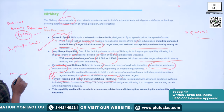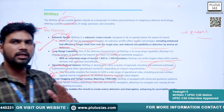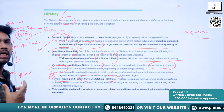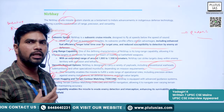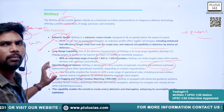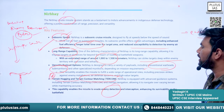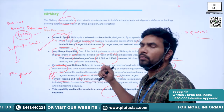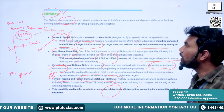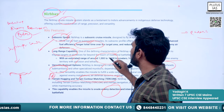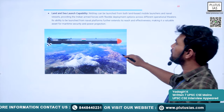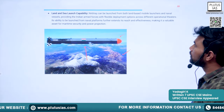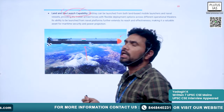Nirbhay has versatile payload types — conventional warheads, sub-munitions, and other specialized munitions depending on mission requirements. Importantly, it has terrain-hugging capability: the missile flies very close to the surface of the earth, evading enemy radar detection and interception, enhancing survivability on the battlefield. Its range exceeds that of BrahMos, and it has both land and sea launch capability.